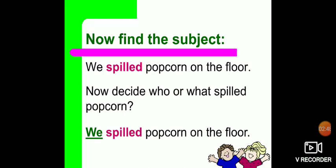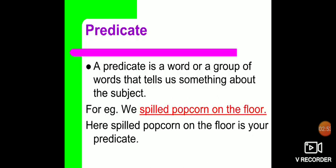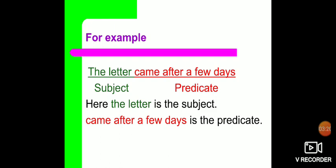I hope subject is clear to all of you. Now we will find the predicate. A predicate is a word or a group of words that tells us something about the subject. For example, 'We spilled popcorn on the floor.' Here 'spilled popcorn on the floor' is your predicate — except the subject, whatever is left is your predicate. Let's take another example: 'The letter came after a few days.' The verb is 'came', so what came? The letter. Here the subject is 'the letter' and 'came after a few days' is your predicate.